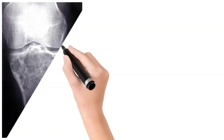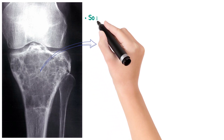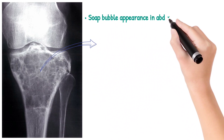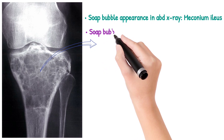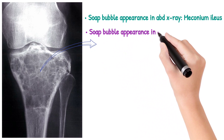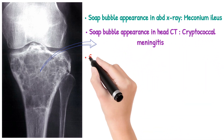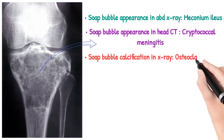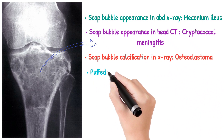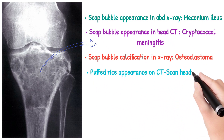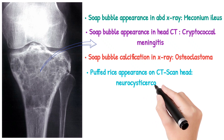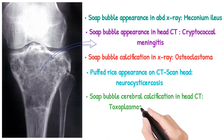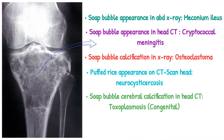Differential diagnosis of soap bubble appearance: soap bubble appearance in abdominal X-ray — meconium ileus; soap bubble appearance in head CT — cryptococcal meningitis; soap bubble calcification in X-ray — osteoclastoma; puffed rice appearance on CT scan head — neurocysticercosis; soap bubble cerebral calcification in head CT — toxoplasmosis.